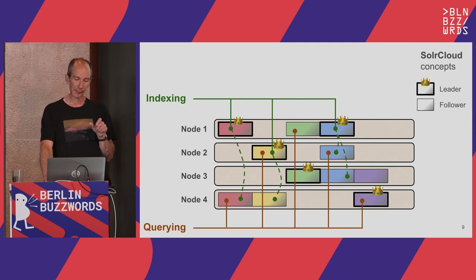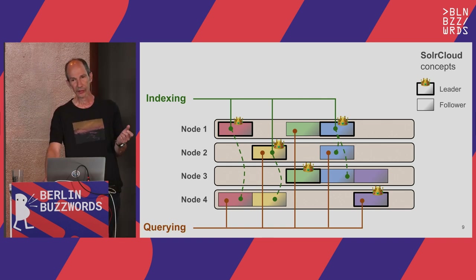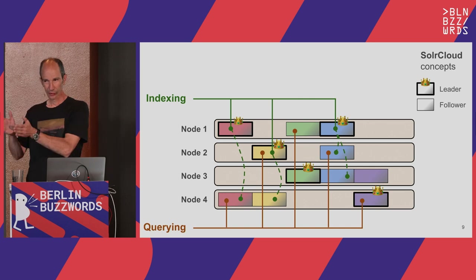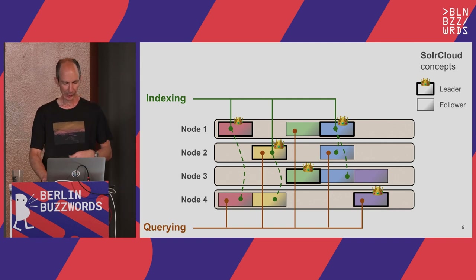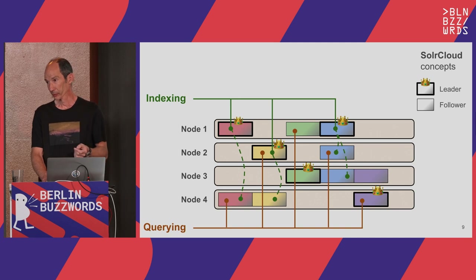For queries, they usually go to the whole collection because you don't know ahead of time which shards will have the documents you're looking for — unless you know your sharding strategy. So queries are distributed to replicas of all shards. They can be handled by the leader replica or by follower replicas, which might be slightly less up-to-date, but that's acceptable.